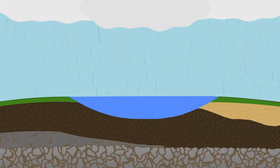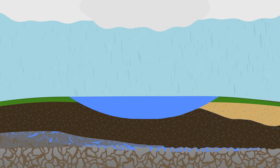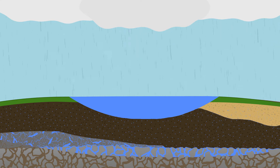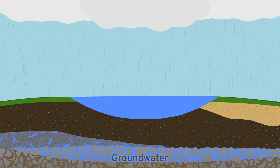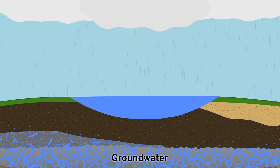What is groundwater? Groundwater is the water within the ground. Similar to water moving through a sponge, water fills spaces within the soil and rock, creating saturated zones within the earth.